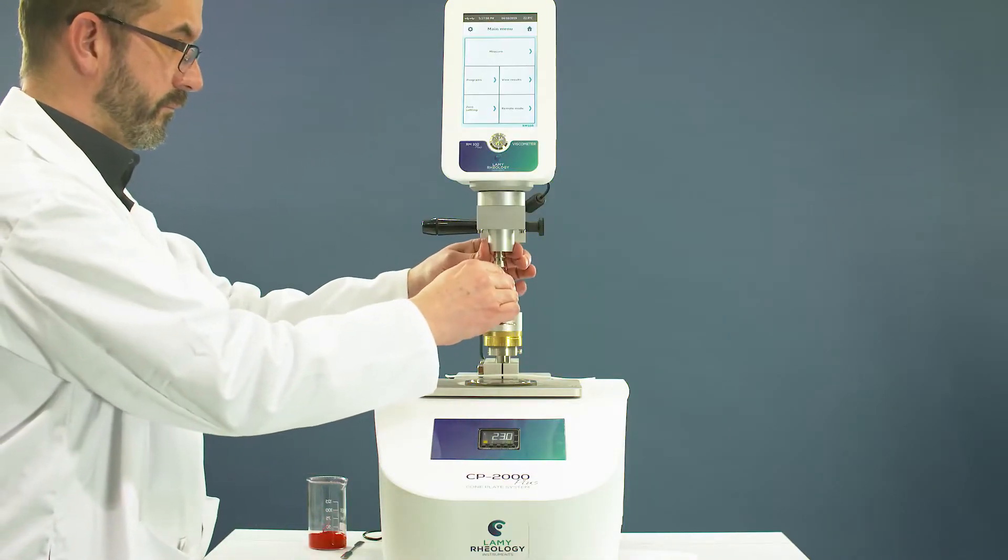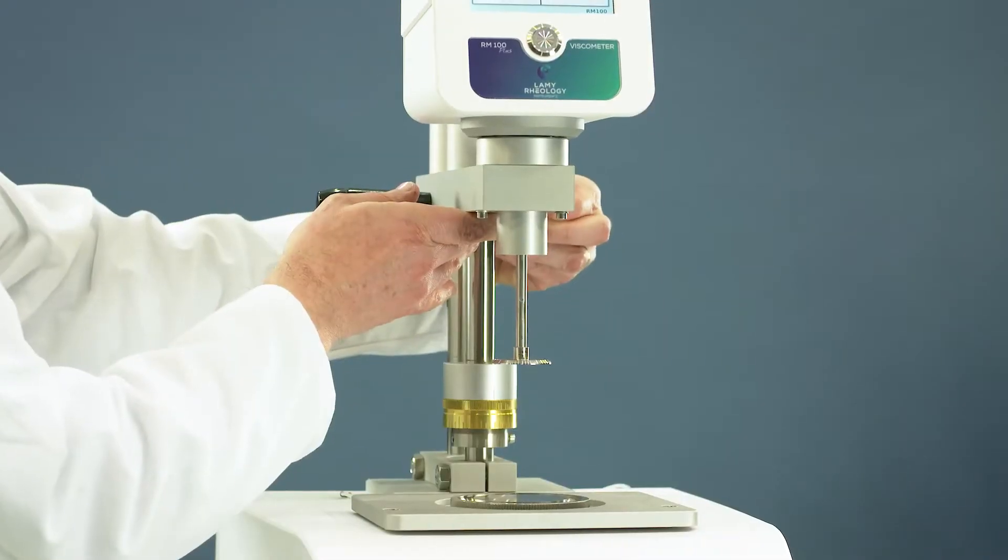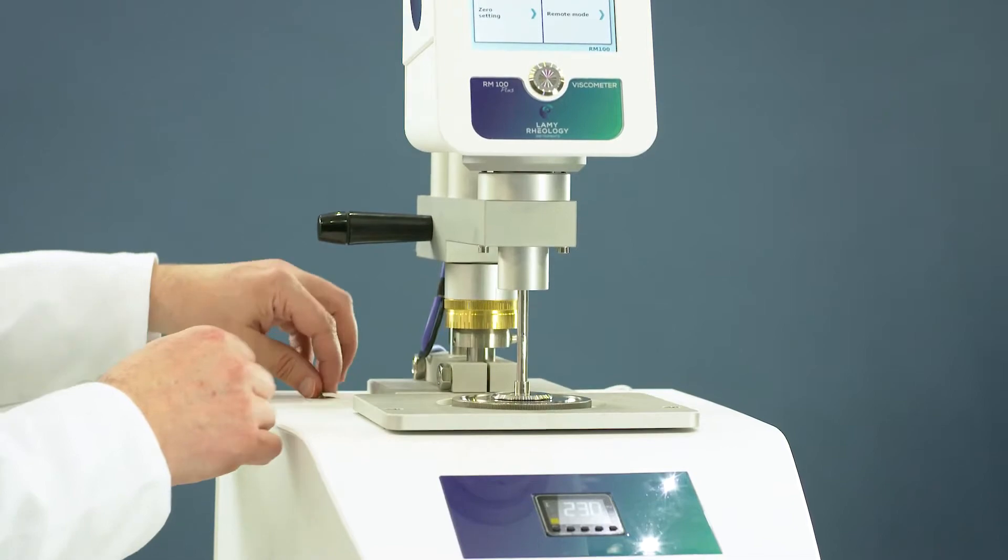Install the cone plate with the easy coupling AC265. Move down the measuring head. Be sure that the cone plate doesn't touch the lower plate.